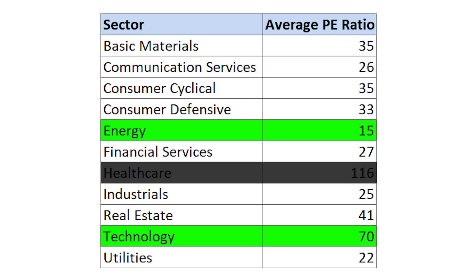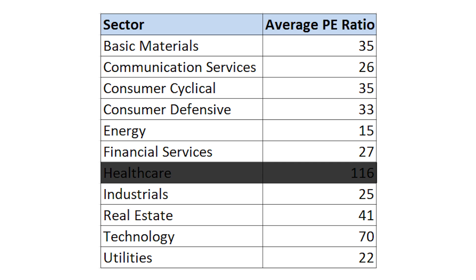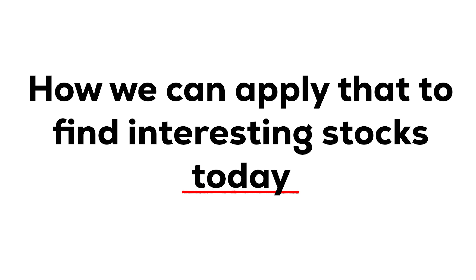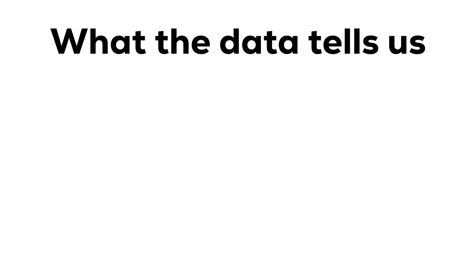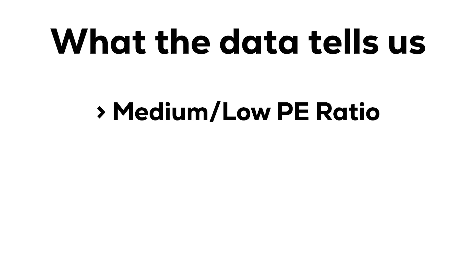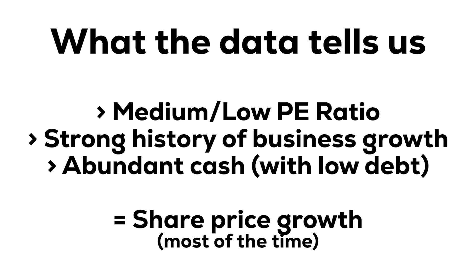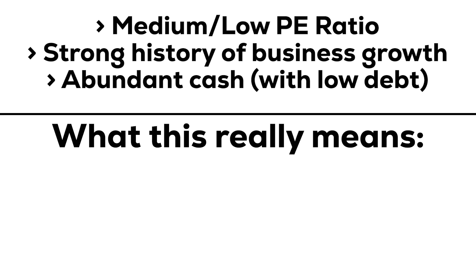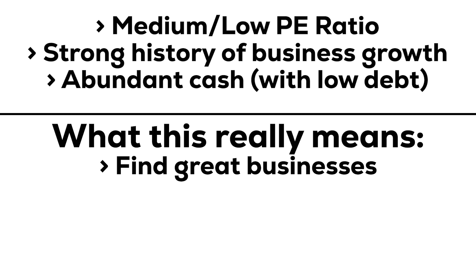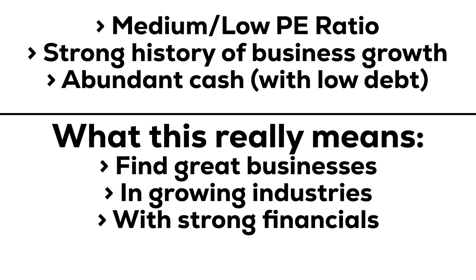This is vital information because a P/E ratio of 30 doesn't mean a stock is over or undervalued — context is everything. What the data tells us is that stocks with a medium or lower P/E ratio and, crucially, a strong history of growth and abundant cash resources have great potential for share price growth. In plain terms: don't look for undervalued stocks, but instead find great businesses in growing industries with strong underlying financials that are reasonably priced.